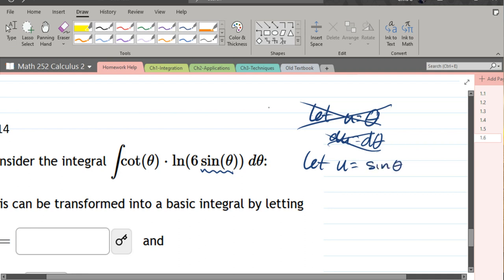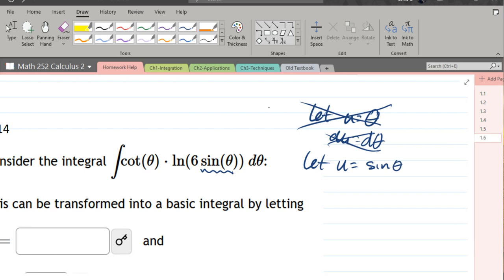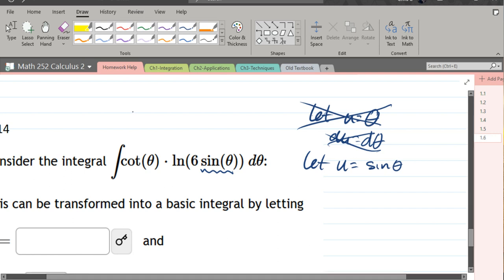It's tempting to grab six sine theta. That might work out just fine, but I like to get the smallest thing first. If that doesn't work, my next choice will be six sine theta. So I'm just going to go with sine theta for now. Du equals derivative of sine theta is cos theta. I'm going to skip a step and put my d theta on the right side there.